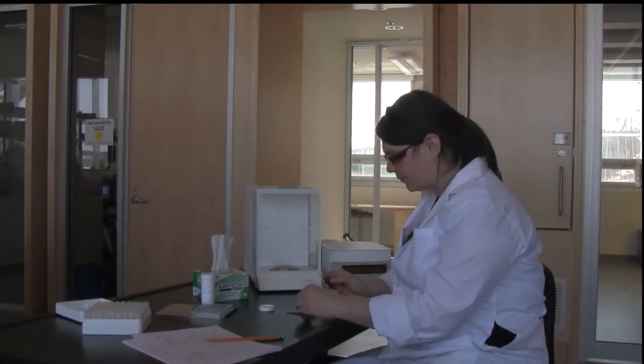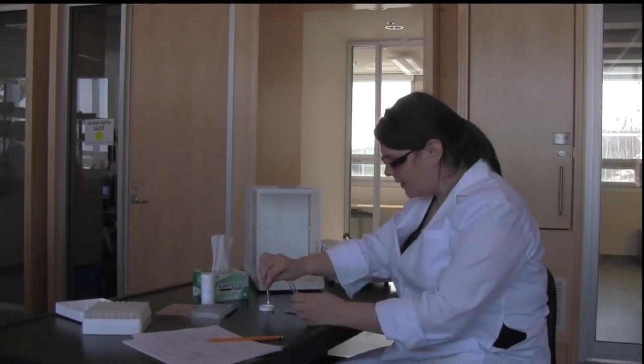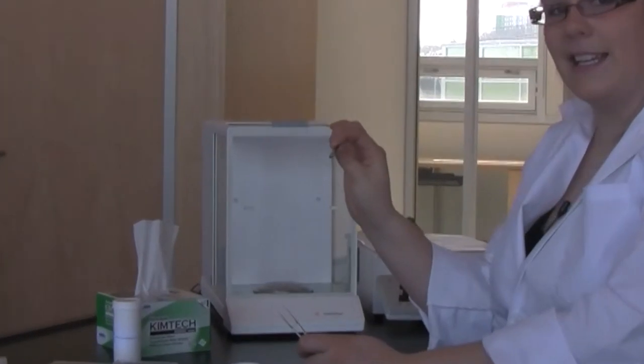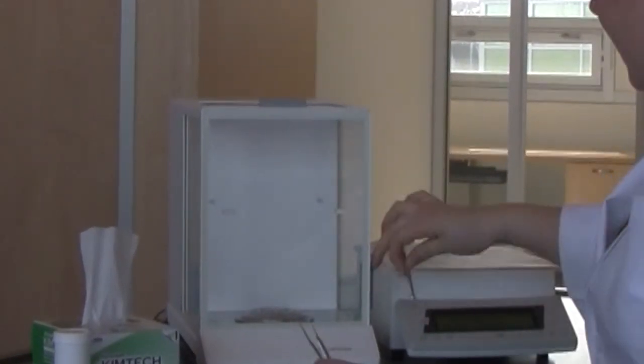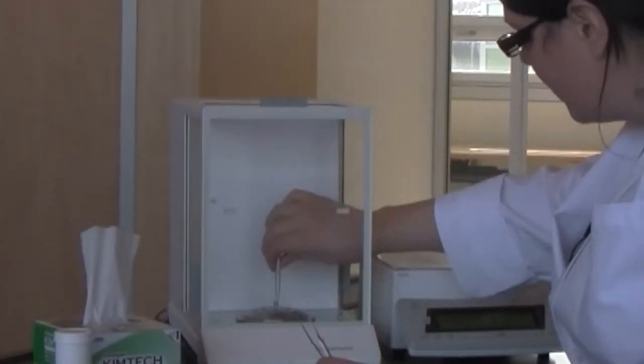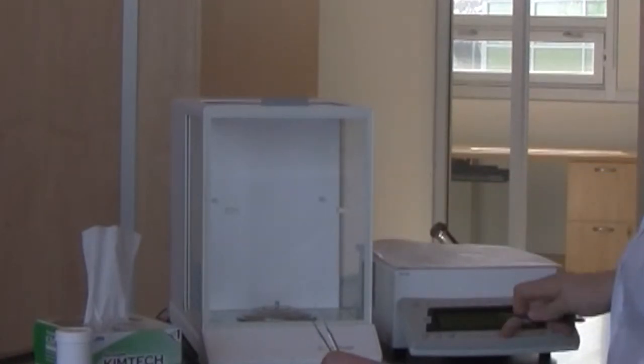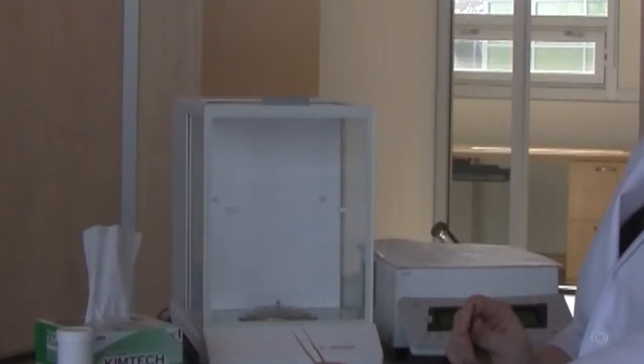Here we are going to weigh our samples out in tiny tin capsules to be sent away for analysis. It's very important that between samples, you clean all utensils. Using your tweezers, pick up a tiny tin capsule, place it onto the micro-balance, and tare it so that your balance records zero.